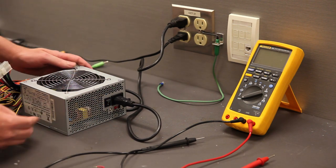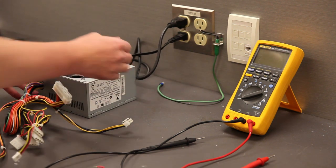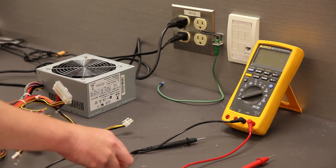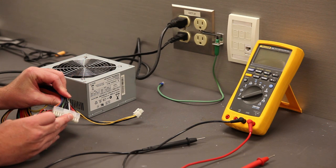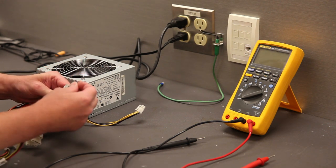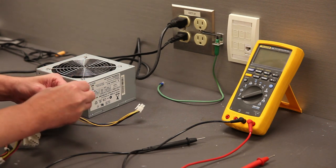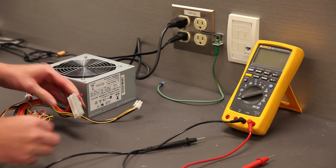Turn the power switch back on and use a jumper wire to short pin 16 to one of the black wires on either side of it. You should now see that the fan is spinning.